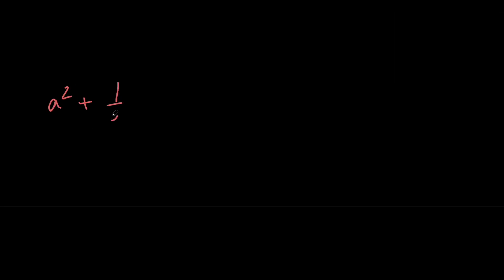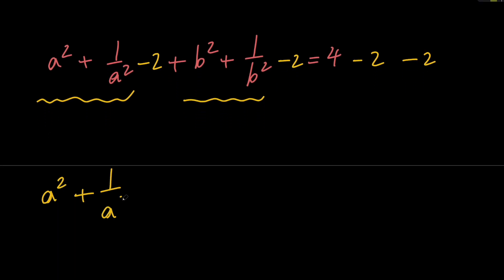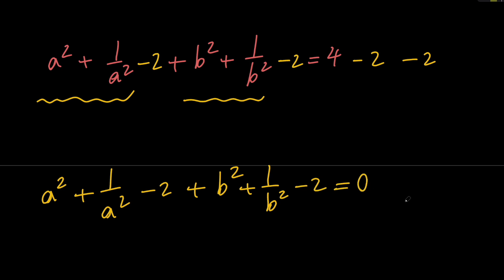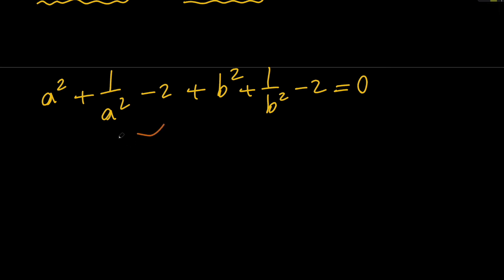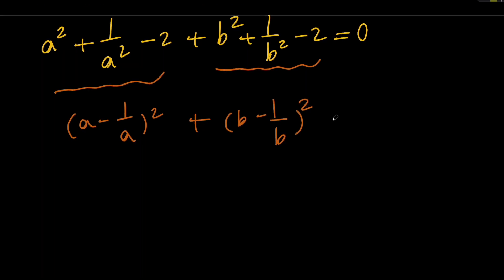We have a squared plus 1 over a squared plus b squared plus 1 over b squared equals 4. Let's complete the square for each pair by subtracting 2 from both sides for each. So we get a squared plus 1 over a squared minus 2, plus b squared plus 1 over b squared minus 2, equals 0.